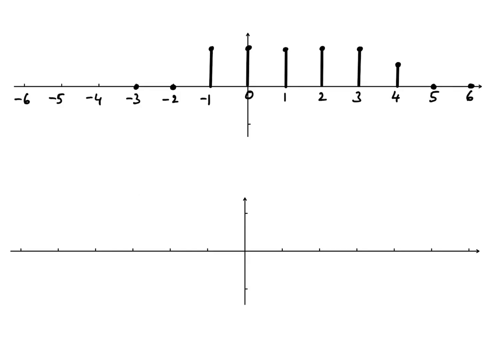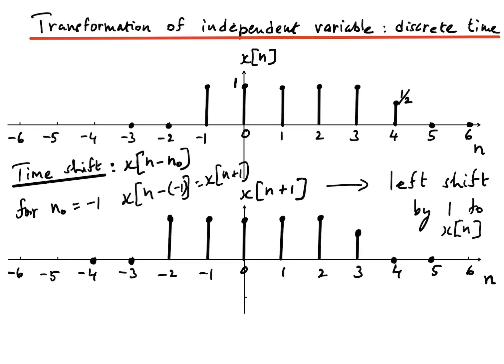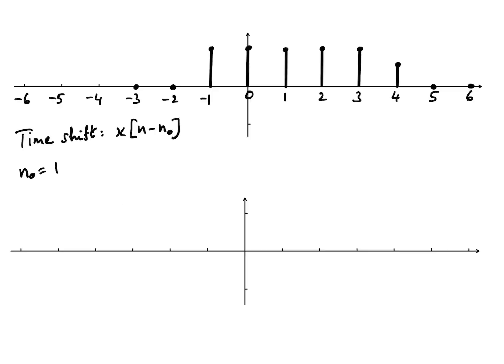Now we will do x[n - n₀] again, which is a time shift, and we are going to choose n₀ equal to plus one. So we get x[n-1]. Because there is a minus sign here in the shift, that indicates a right shift by one unit of n. The x-axis variable, the independent variable, is n.